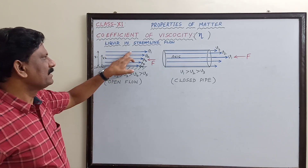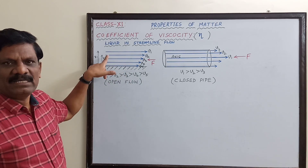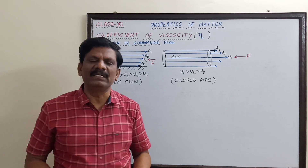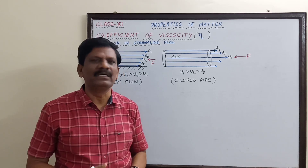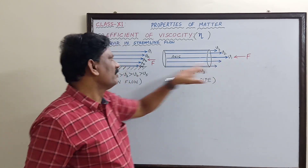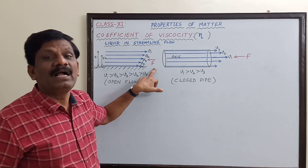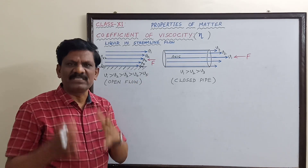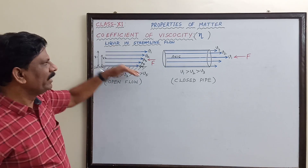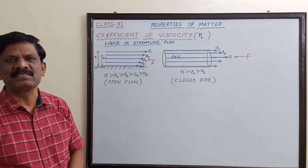Why? Because there is internal friction between the different layers, so an opposing force acts on the liquid. This opposing force is called the viscous force, and the property of the liquid which opposes the relative motion between different layers is called viscosity.